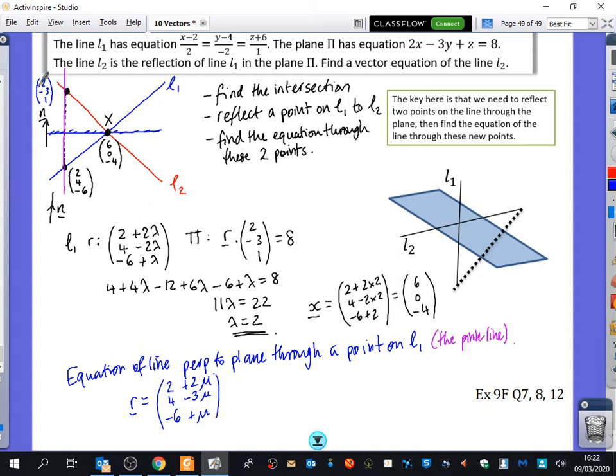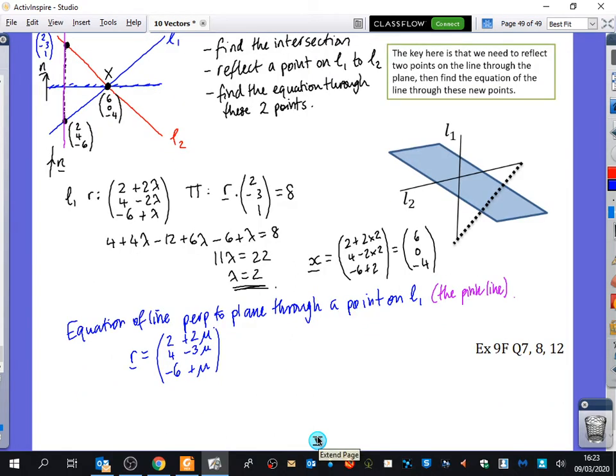I want to find where it intersects the plane, so I'll dot these two together with the same plane as before, which equals 8. That's 4 + 4μ - 12 + 9μ - 6 + μ = 8. So 14μ = 22, which gives μ = 22/14 = 11/7.